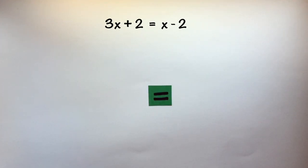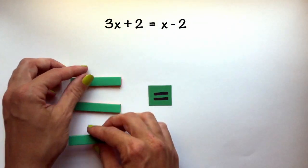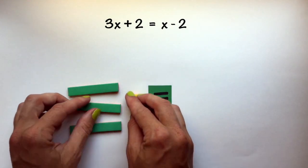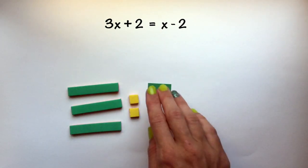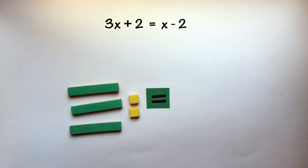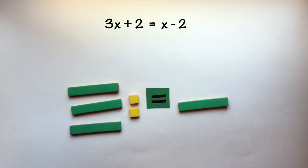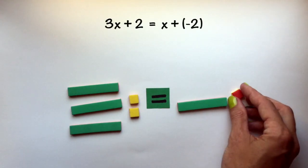First, we need to put 3x plus 2 on one side of our equation. And on the other side of our equation is x minus 2, or x plus negative 2.